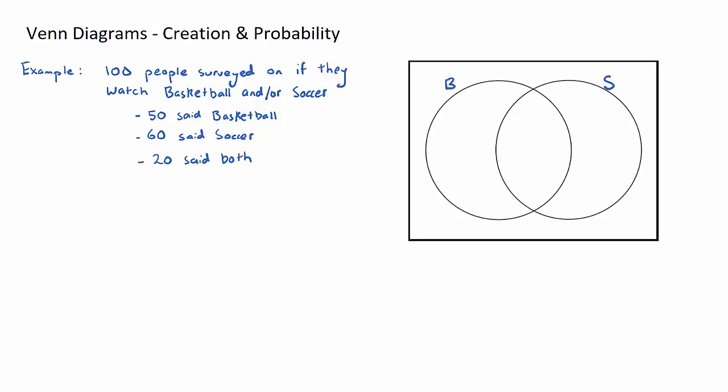So let's have a look at my information here. I'm going to start from the inside out, which is the people that play both basketball and soccer. This part here is called the intersection of B and S, and we are told that 20 said both. So 20 people watch both basketball and soccer, that's what this 20 here represents.